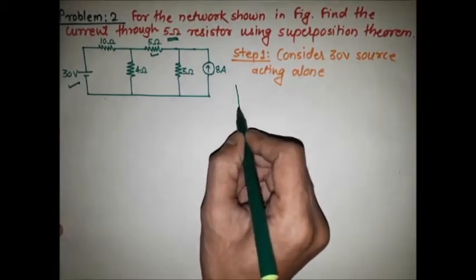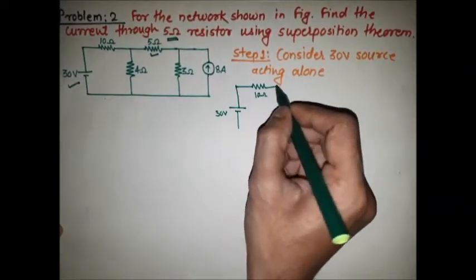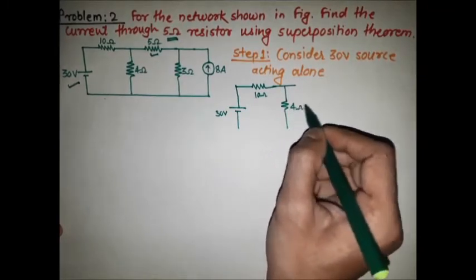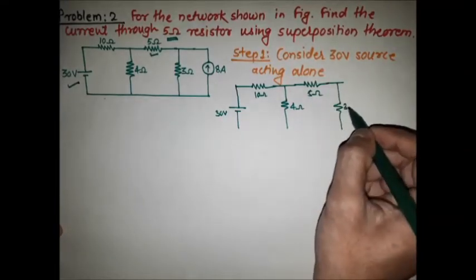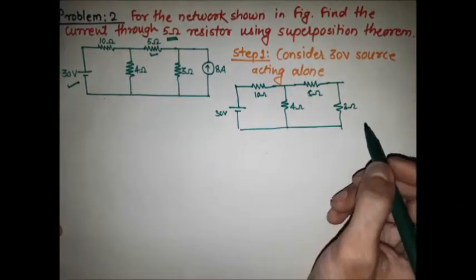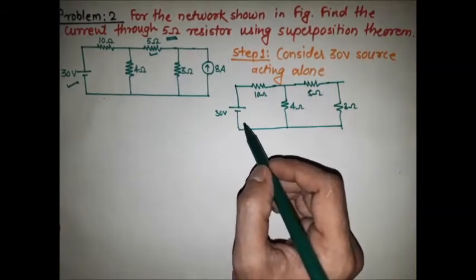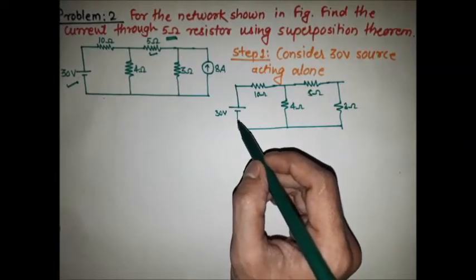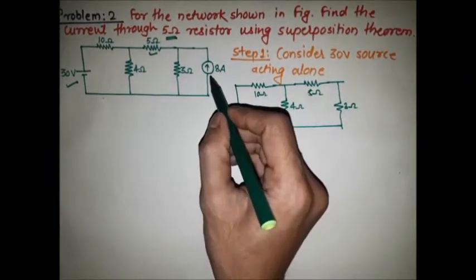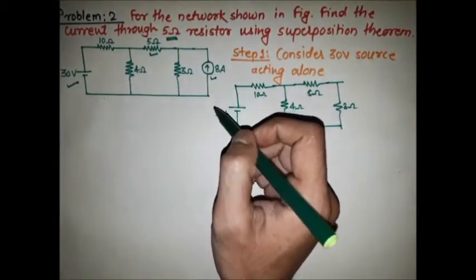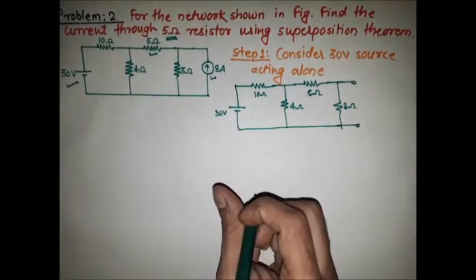The 30V source is in series with the 10 ohm resistor, then connected to the 4 ohm resistor, the 5 ohm resistor, and the 3 ohm resistor. As covered in the first lecture, when replacing a current source, we replace it with an open circuit because the internal resistance of the current source is infinite. So we are simply removing the current source.